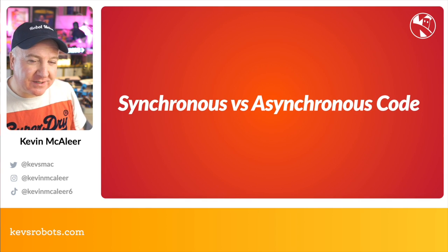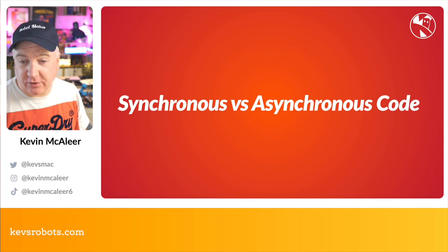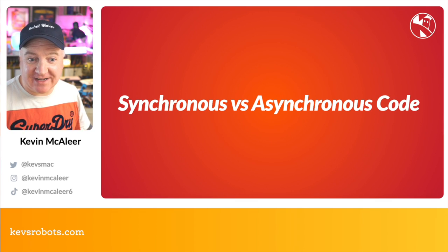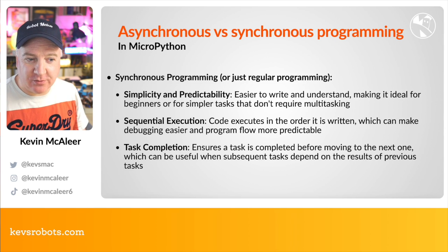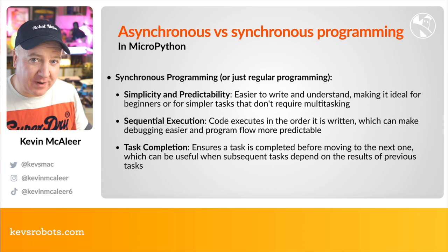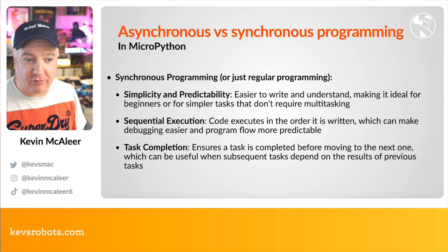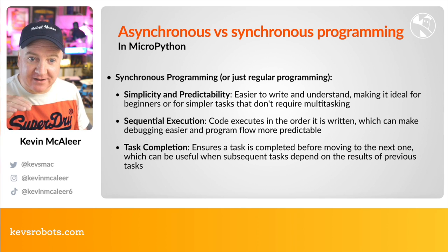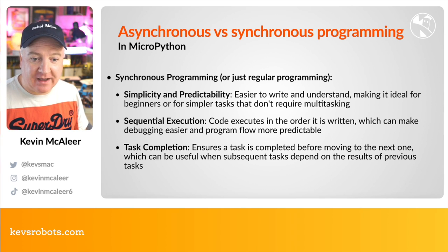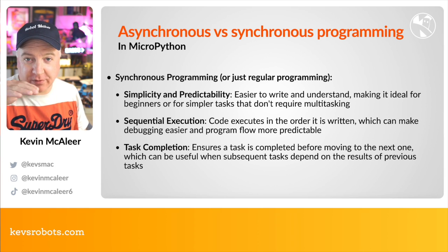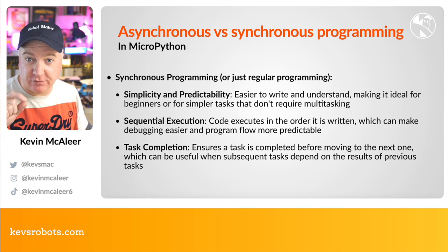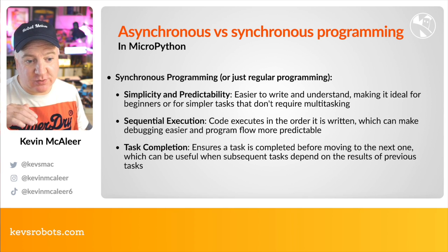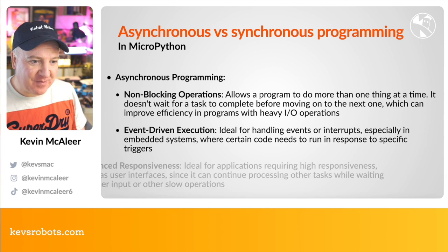To use BLE we'll need to use asynchronous programming, which is different from what we've typically done. Synchronous code — regular MicroPython programs — is simple, predictable, easy to write and understand. It's sequential in execution, sometimes called procedural programming, making it easy to debug. Task completion means moving from one task to another, waiting for one to finish before moving to the next.